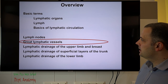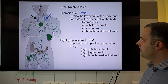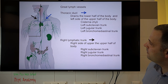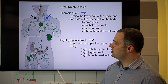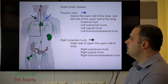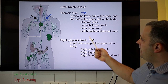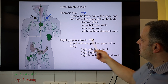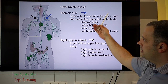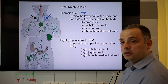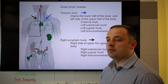Now I would like to talk about the great lymphatic vessels. The primary, secondary, and tertiary lymph nodes collect the lymph fluid into larger lymph vessels. Here you can see a summary of these great lymphatic vessels, which are found in the thoracic cavity.